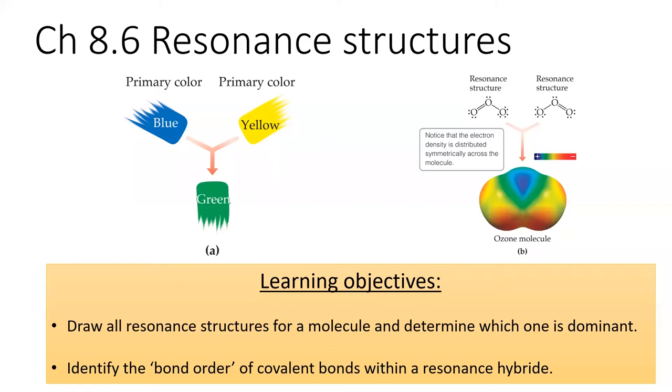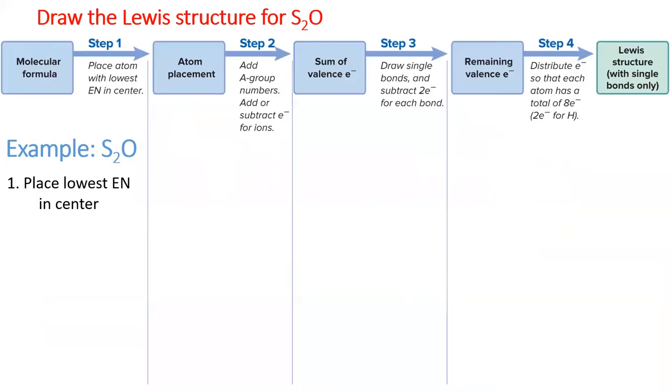Resonance reminds us that electrons behave as waves even when they're inside molecules. Thus, electrons can spread out their density over multiple bonds and lone pairs. What do I mean by this? Well, let's explore by drawing another Lewis structure. This time for disulfur monoxide.